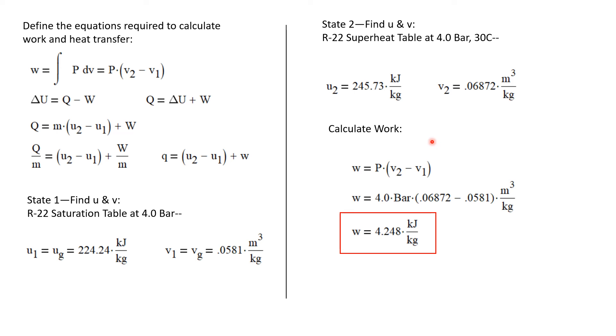Now I can calculate the work. We said that the work per unit mass is just the pressure of the process times the change in specific volume. We have all of those values at hand, and we calculate the work to be 4.248 kilojoules per kilogram of refrigerant.